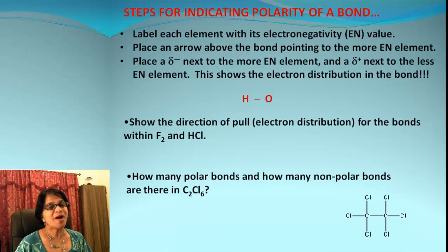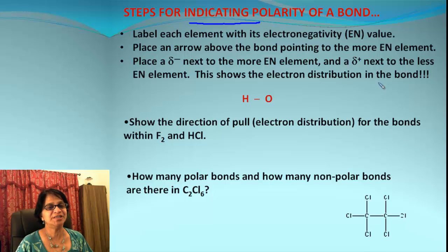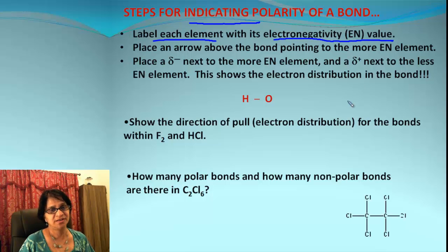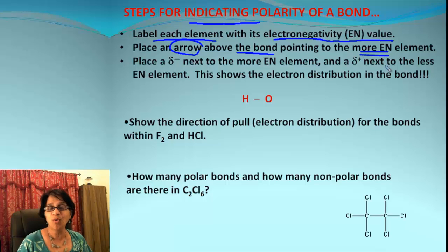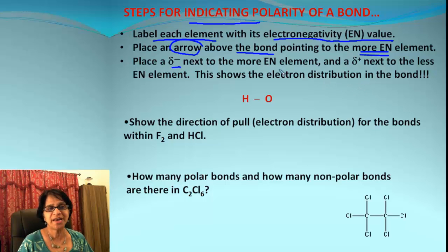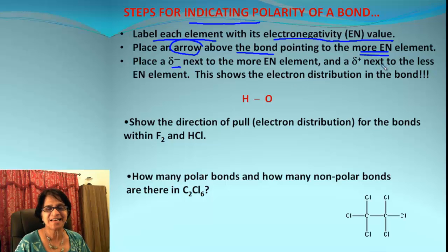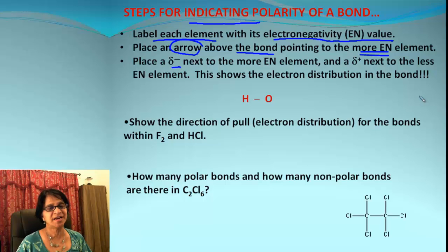Here are the steps to find out the polarity of a bond and how to indicate it in compounds. Step one: label each element and write down the electronegativity values. Step two: put an arrow above the bond pointing towards the more electronegative element. We also put delta negative on the more electronegative side and delta positive on the other. Delta indicates an extremely small quantity of charge, showing exactly how electrons are distributed across that bond.